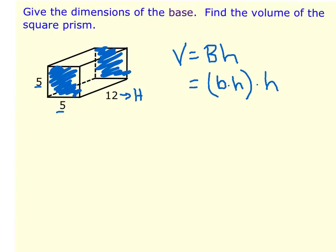times the height of the prism. So 5 times 5, area of the base, times 12, which is the height of the prism, we would get 25 times 12, which is 300 cubic units.